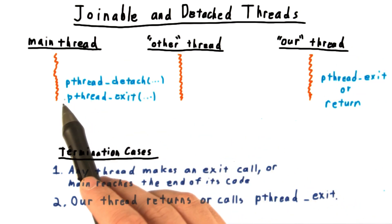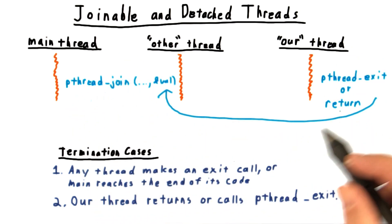Joinable threads, by contrast, don't get destroyed right away when they finish. Instead, they stick around until another thread joins them.